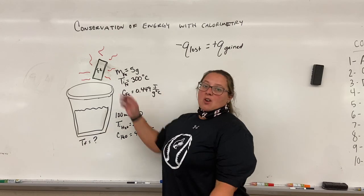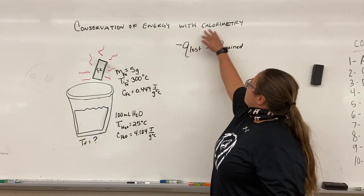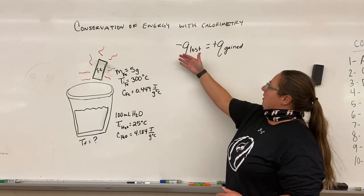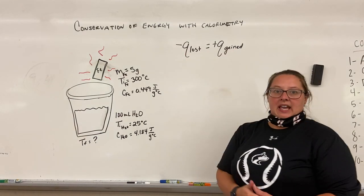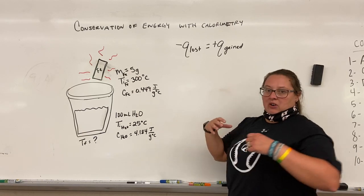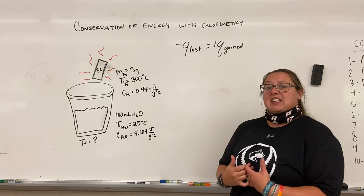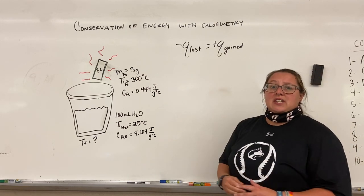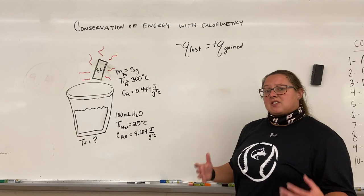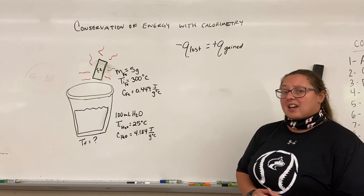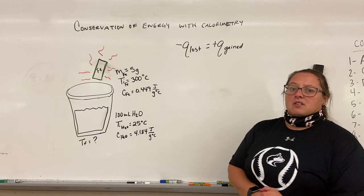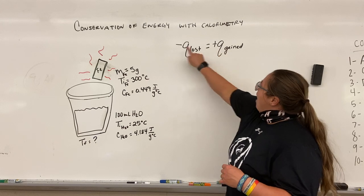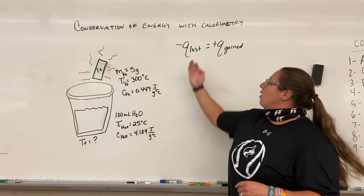In this video we're going to talk about conservation of energy with calorimetry. Whenever I have a reaction or I'm putting two substances together at different temperatures, one of those substances is going to lose the heat. If it's released to the surroundings, it's an exothermic process. One substance will be exothermic and the other will be endothermic — gaining that same amount of heat, equal but opposite in direction.